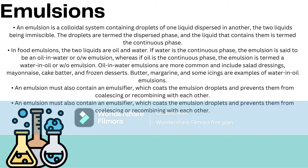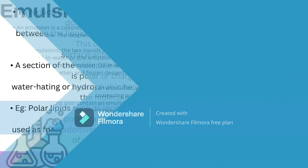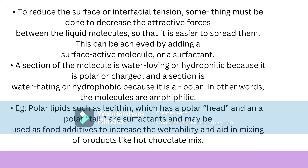Oil-in-water emulsions are more common and are found in mayonnaise, cake batter, and frozen desserts. Butter and some icings are examples of water-in-oil emulsions. An emulsion must also contain an emulsifier which coats the emulsion droplets and prevents them from coalescing or recombining with each other. To reduce the surface or interfacial tension, something must be done to decrease the attractive force between the liquid molecules so that it is easier to spread them. This can be achieved by adding surface-active molecules or a surfactant.